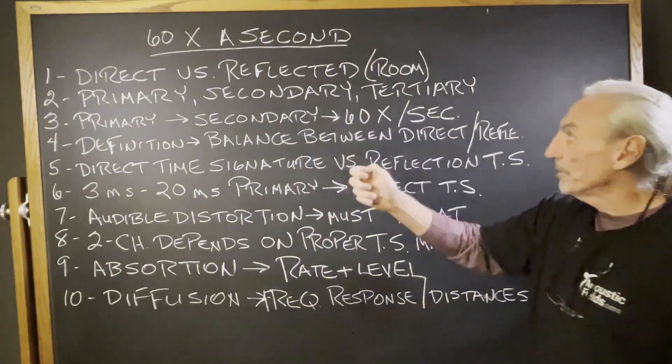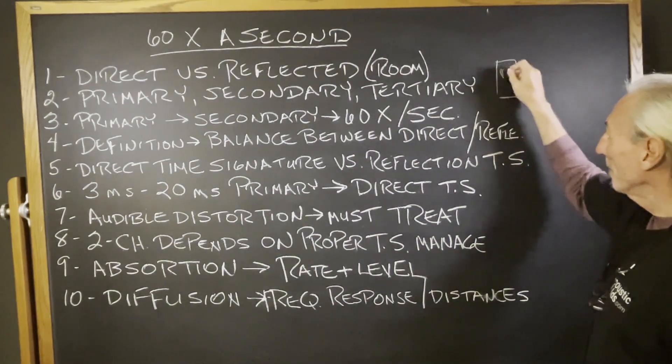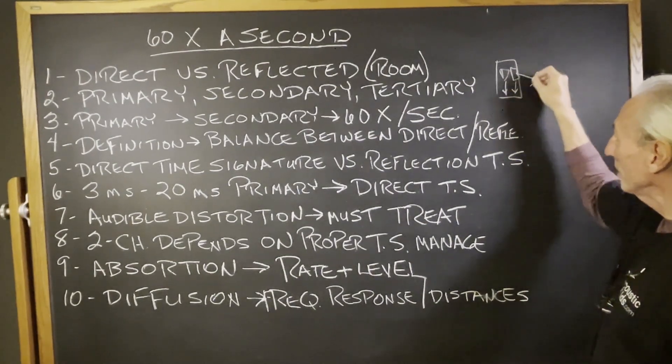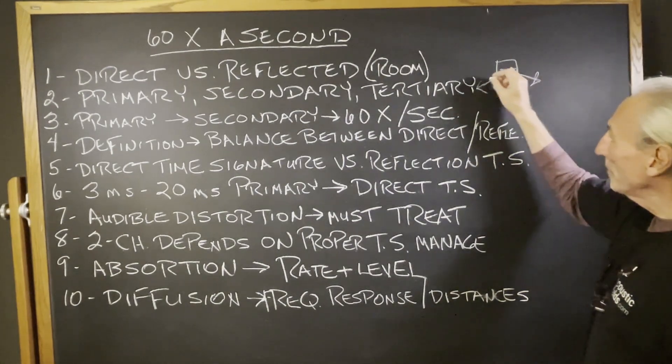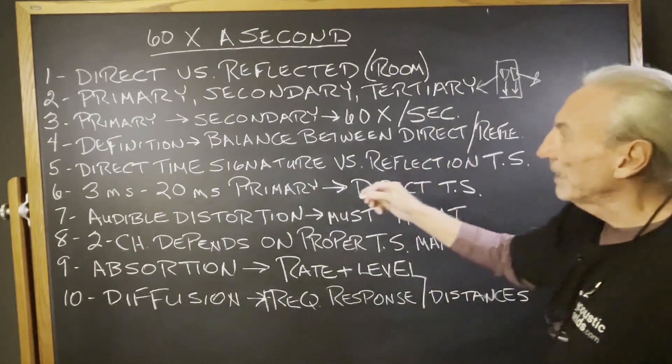Remember in our rooms we always have this balance between direct and reflected energy. Here's our speakers, that's the direct straight line energy, and then we've got all these reflections coming from the room. So there's always a ratio between the reflections and the direct energy, and there's a balance there.